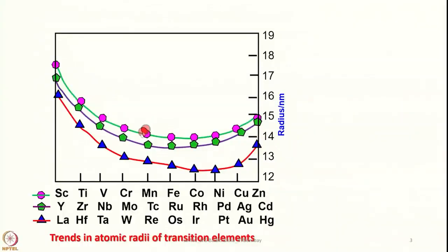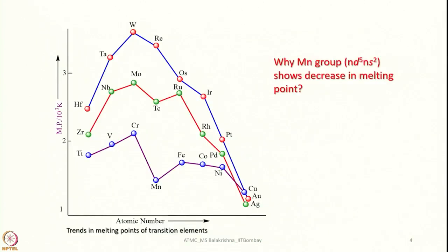One should understand the trends in atomic radii, melting point, boiling point, and ionization energy, and try to analyze how properties vary within a group and along a period when filling from d⁰ to d¹⁰ electronic configuration. For example, you can see why the manganese group shows a decrease in melting point. All these things are clearly spelled out in my lectures. Please give attention to these things so that you can understand the behavior in a better way.